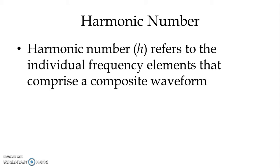We normally refer to harmonic numbers instead of frequencies for two reasons, because everywhere we have different fundamental frequencies. Here we have 50 Hz; in some places we have 60 Hz. In traction we use 25 Hz, in aerospace we use 400 Hz, and in inverters or adjustable speed drives we have from zero up to the fundamental frequency. That is why we use harmonic numbers instead of frequencies.